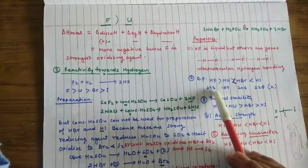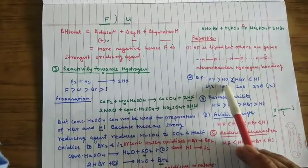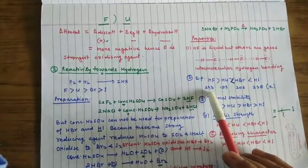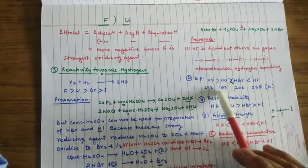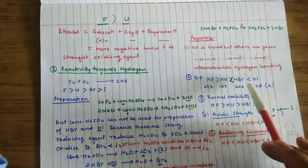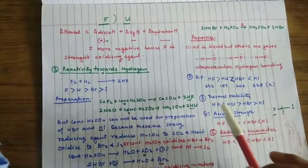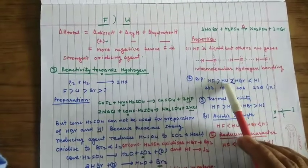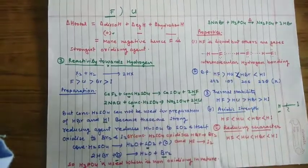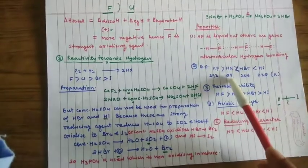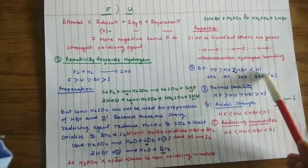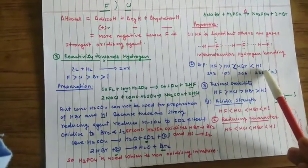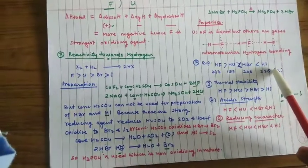Because of this intermolecular hydrogen bonding, HF has higher boiling point and it is liquid. You can see the boiling point of the different hydrogen halides: HF, the boiling point is 293 and HCl is 189. When going down the group, it increases because HF has intermolecular hydrogen bonding and HCl has dipole-dipole attraction. Down the group it will increase because size will increase.